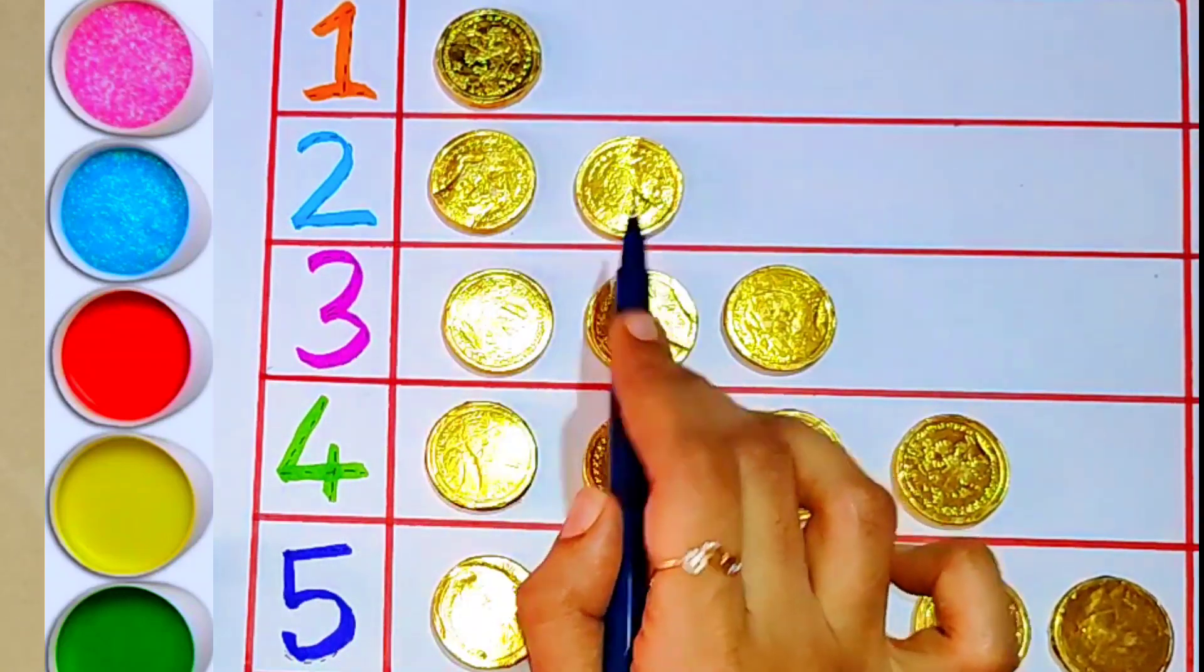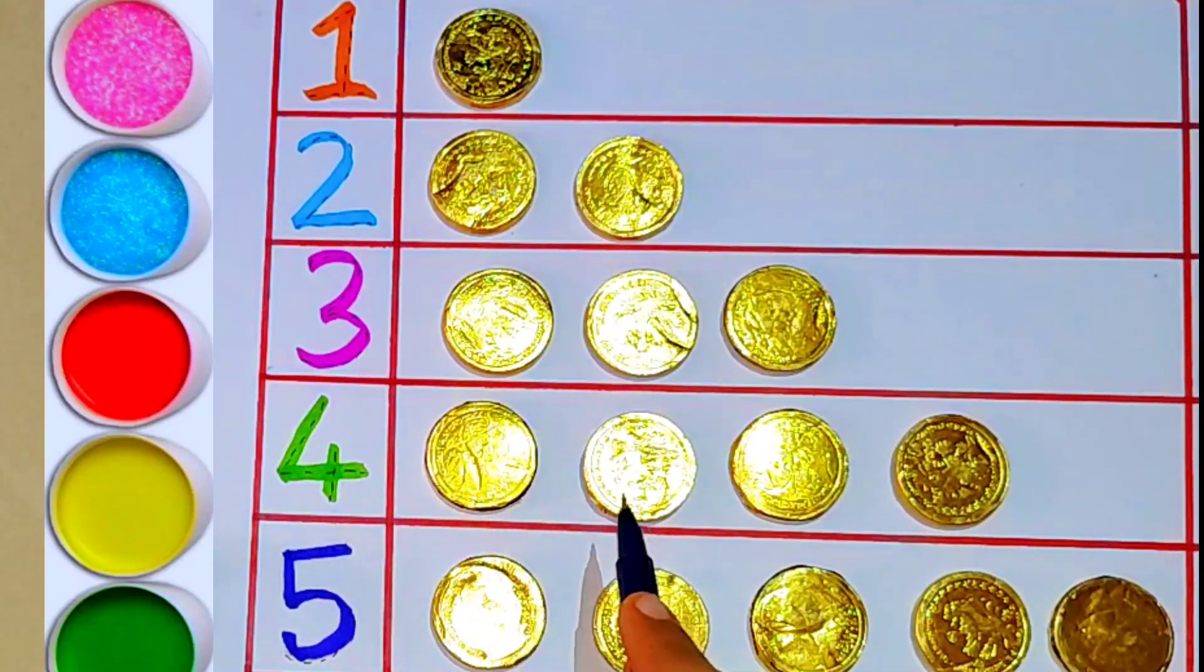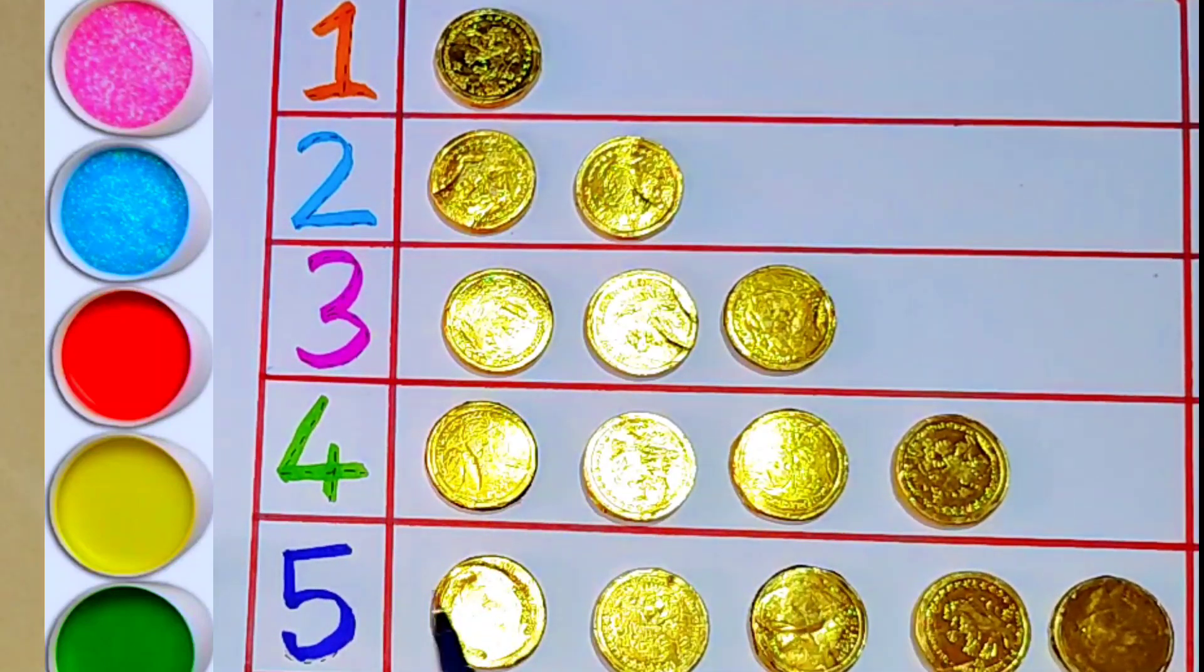Let's review: one - one coin, two - one, two coins, three - one, two, three coins, four - one, two, three, four coins, five - one, two, three, four, five coins.